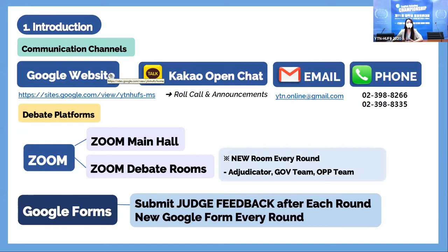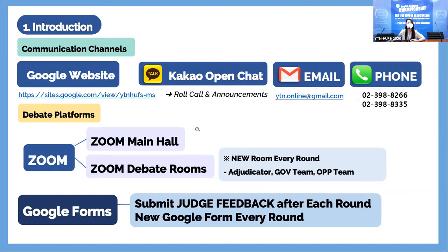When you start preparing for debates — from the time of motion release until the adjudicator dismisses you after oral adjudication — you're not allowed to use smartphones to access these channels. The third channel is email: ytn.online@gmail.com. And lastly, we have cell phone numbers. If you have any inquiries or problems during the tournament, you can call these numbers.